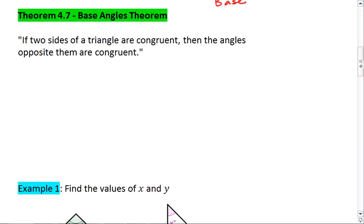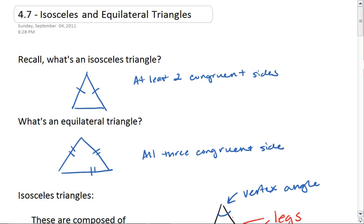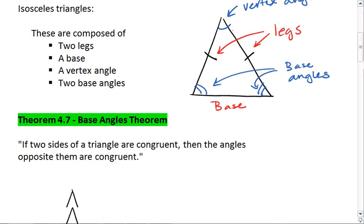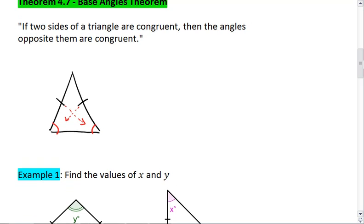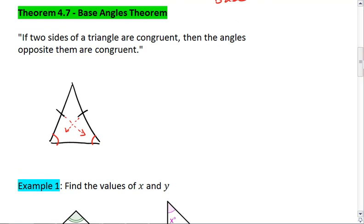Theorem 4.7, the base angle theorem, tells us that if we have a triangle, if two sides of that triangle are congruent, then the angles opposite them are also congruent.